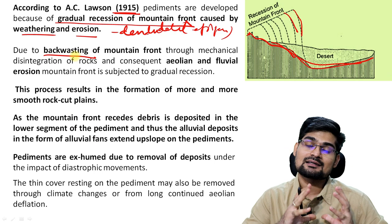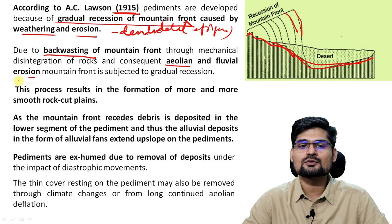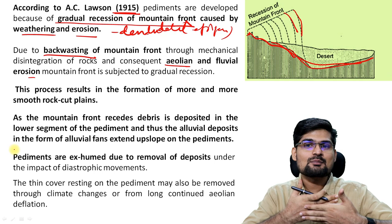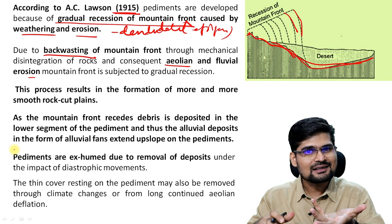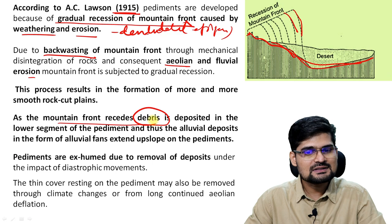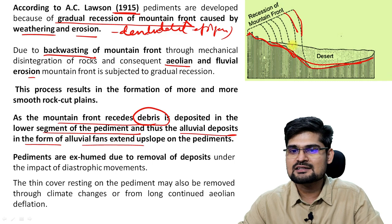Due to back-wasting — parallel retreat and back-wasting, which we discussed from Penck to L.C. King — he said both aeolian and fluvial erosional processes led to gradual erosion, and these mountains receded back. When mountains recede back, the base that is left is the pediment, where you have pedimentation. As the mountain foot recedes, debris is deposited in the lower segment of the pediment and alluvial fans are formed.